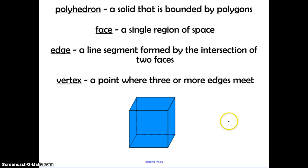A polyhedron is a solid that is bounded by polygons. A face is a single region of space. An edge is a line segment formed by the intersection of two faces. And a vertex is a point where three or more edges meet.